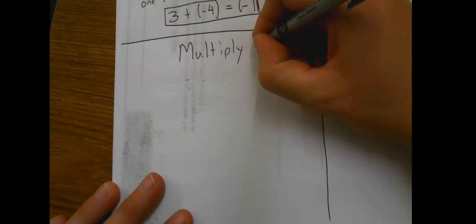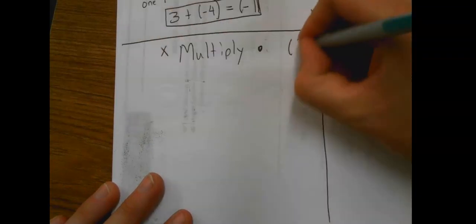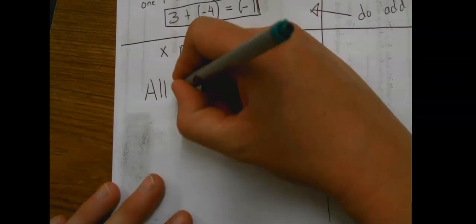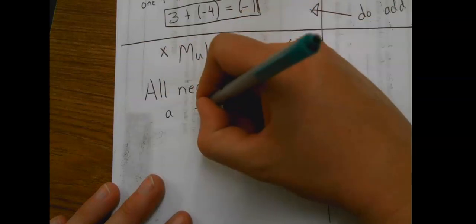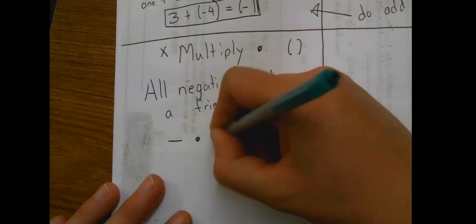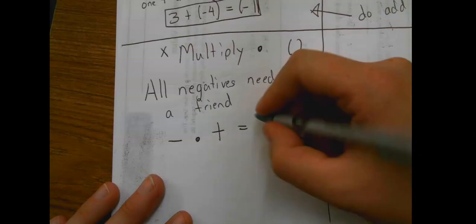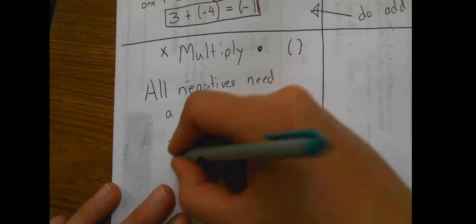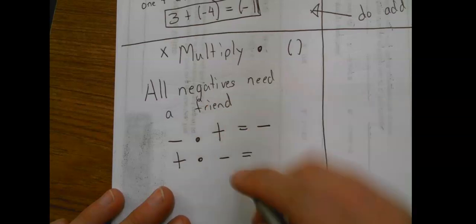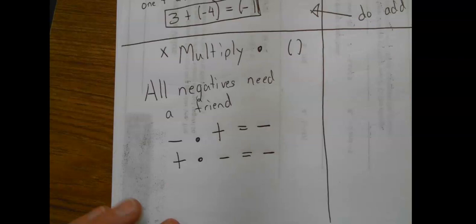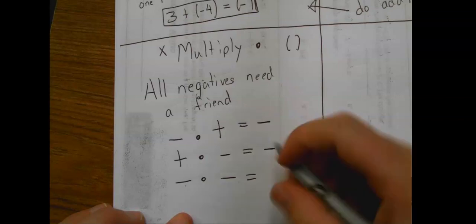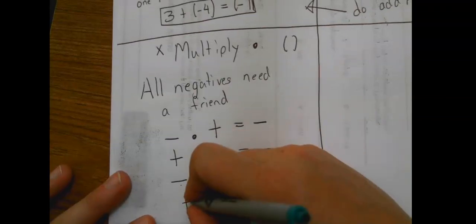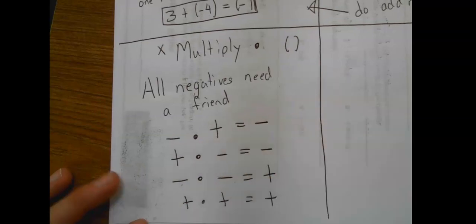For multiplying. Multiply, you can either have the times sign, the x, or sometimes I'll just do parentheses. All negatives need a friend is our number one rule. Which means if you have a negative times a positive, this negative does not have a friend, so your answer must be negative. Likewise, if you have a positive times a negative, this negative doesn't have a friend, so your answer must be negative. But if you have a negative times a negative, these two are friends, so your answer is positive. And positive times a positive is, of course, a positive as well.